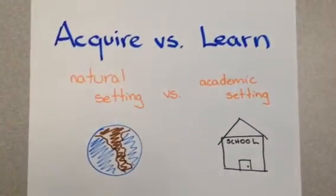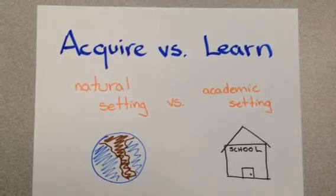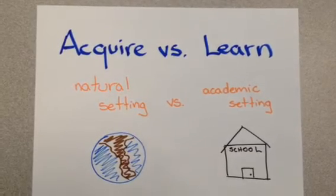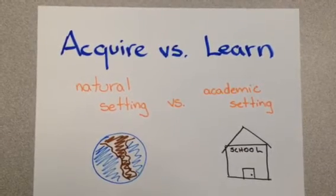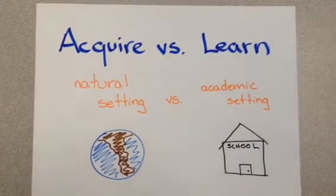It's important to remember that the natural order applies to language that is acquired, not language that is learned. Sometimes students may be asked to learn aspects of language before they are ready to acquire them.